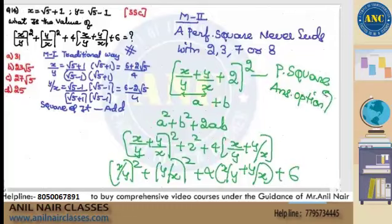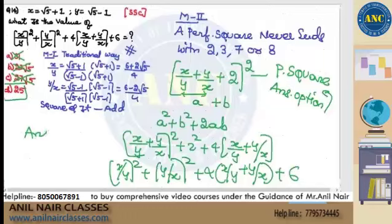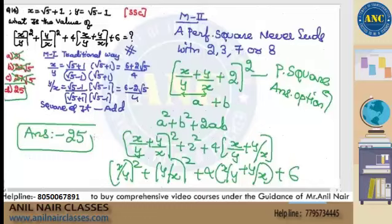Check which answer option is a perfect square. A perfect square ending with 1 must have an even digit in the tens place. Irrational numbers cannot be perfect squares. Therefore, the answer is 25.